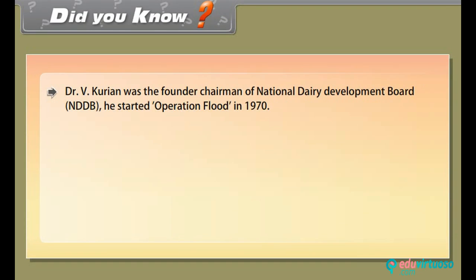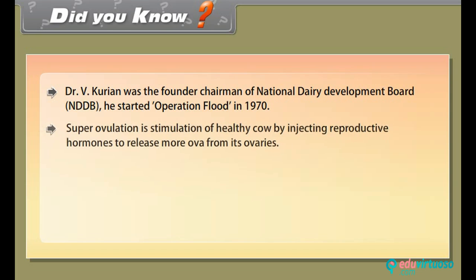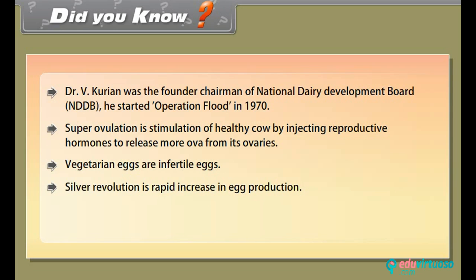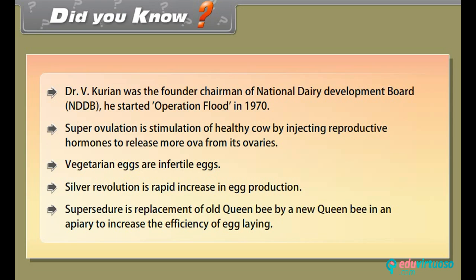Dr. V. Kurian was the founder chairman of the National Dairy Development Board (NDDB) and started Operation Flood in 1970. Super ovulation is the stimulation of a healthy cow by injecting reproductive hormones to release more ova from its ovaries. Vegetarian eggs are infertile eggs. Silver revolution refers to the rapid increase in egg production. Super seizure is the replacement of an old queen bee by a new queen bee in an apiary to increase the efficiency of egg laying.